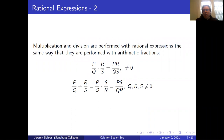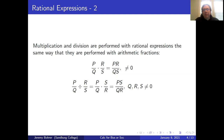Multiplication and division are performed with rational expressions the same way they are performed with arithmetic fractions. P over q times r over s equals pr over qs, as long as q and s are not equal to zero. Likewise, p over q divided by r over s is equal to p over q times s over r, which is ps over qr, as long as q, r, and s are not equal to zero.